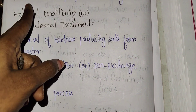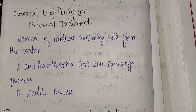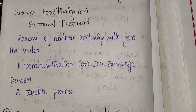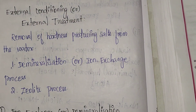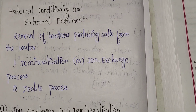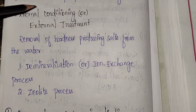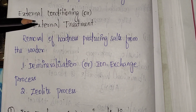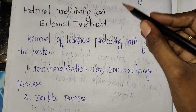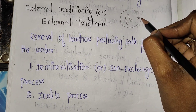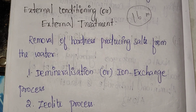In today's class, we are going to look at external treatment and internal treatment. In engineering chemistry, we look at industrial feed water. This is from the first unit — water technology. External treatment is very important; it's a 16-mark question in the question paper. So that's what I'll cover in this video.